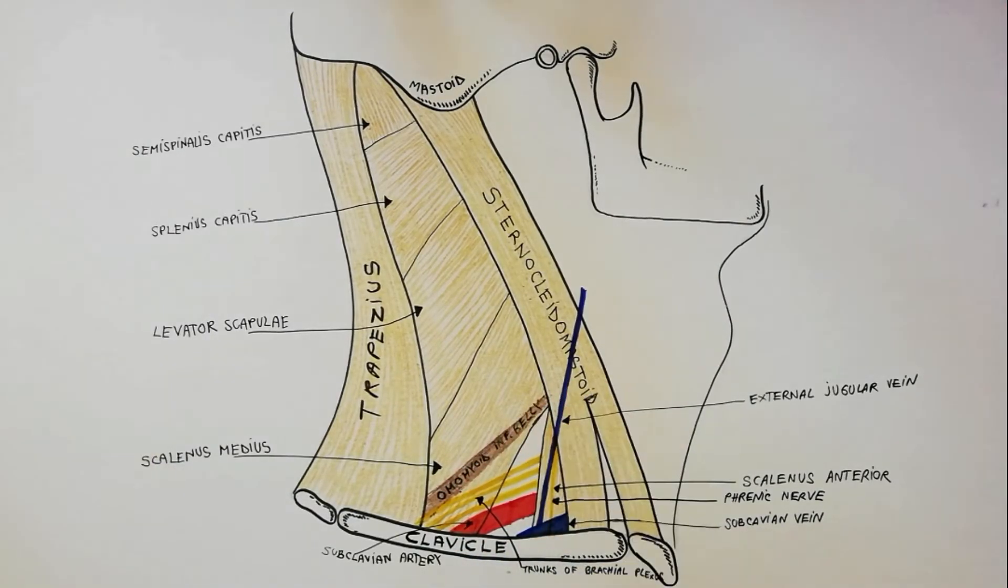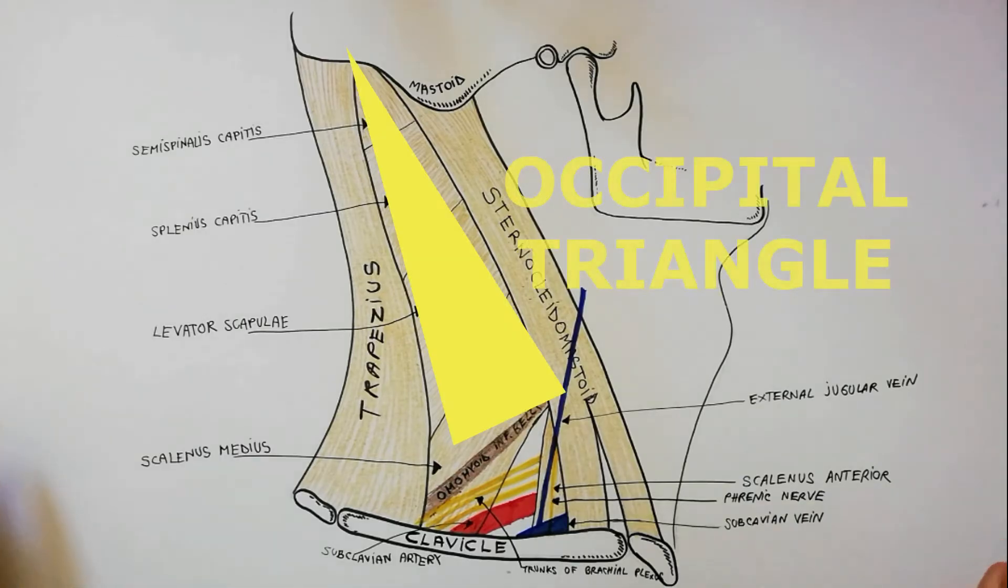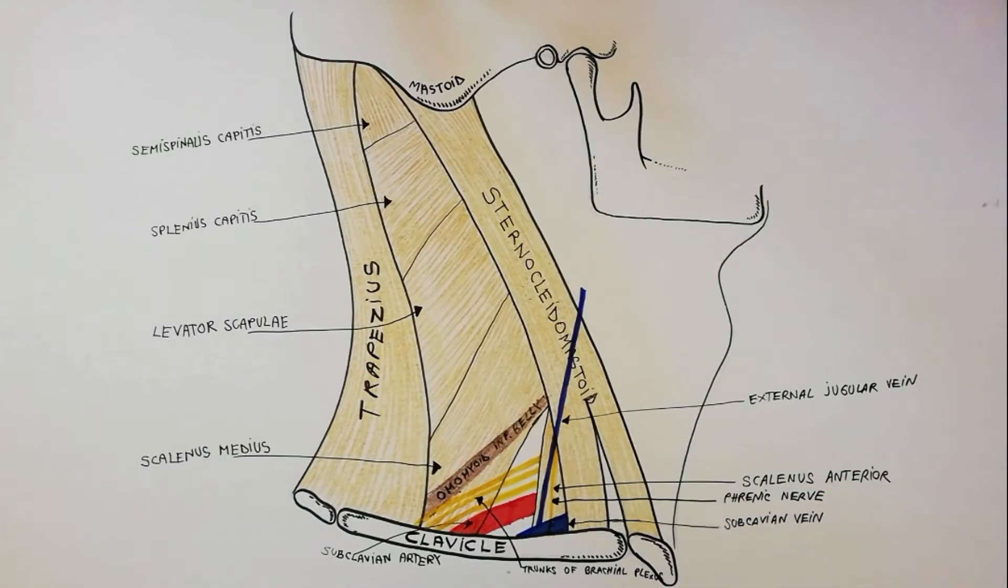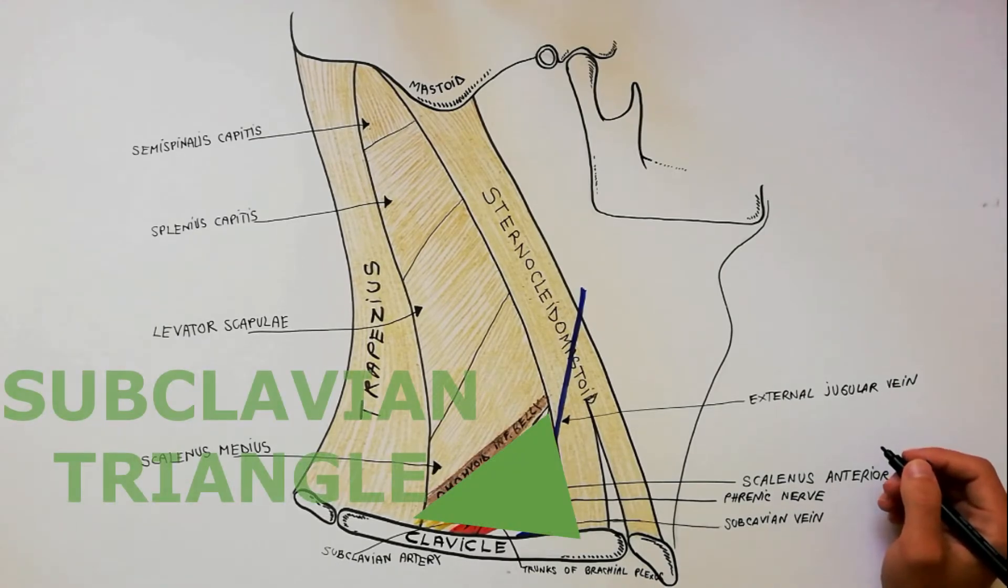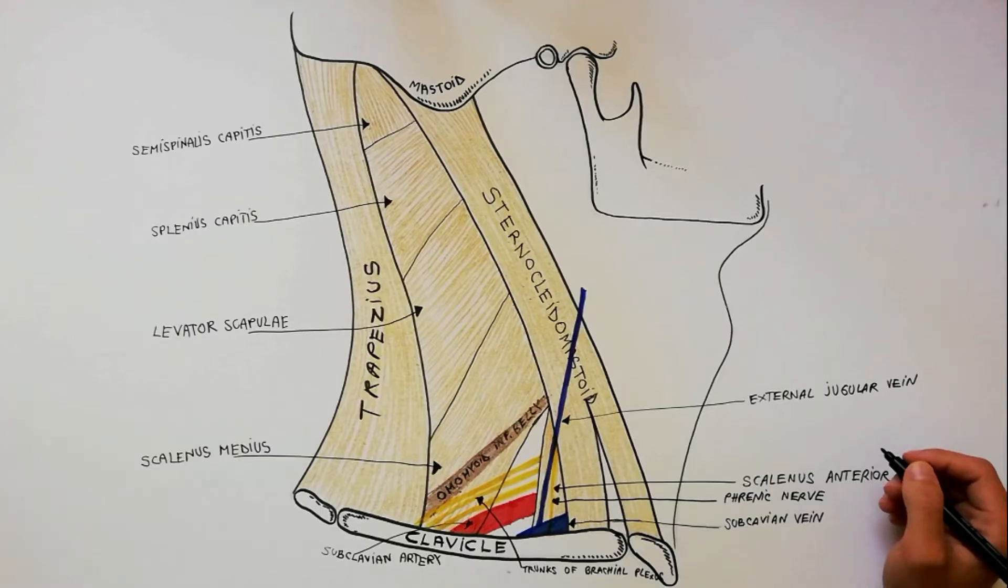The larger upper part is called occipital triangle. The small lower part is called subclavian triangle or the supraclavicular triangle.